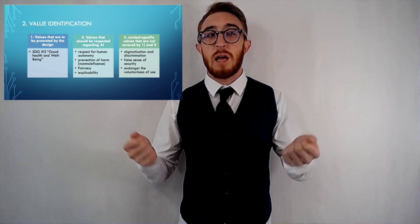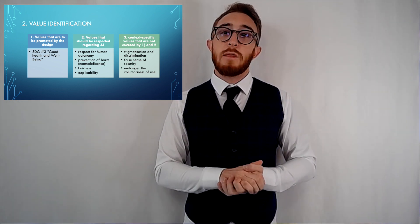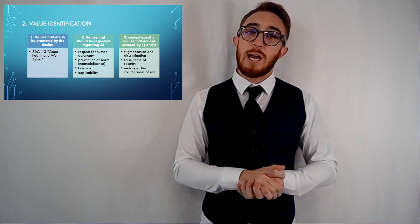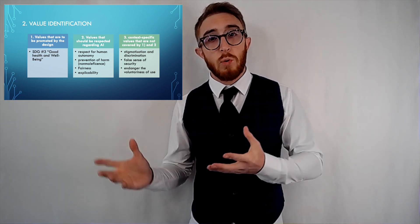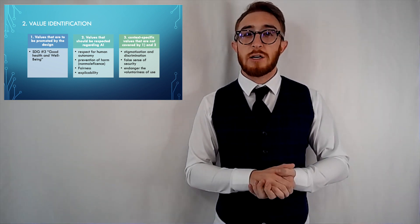And explicability. The employed AI system, in order to support the other values, must be explicable. This means that its inner workings must be intelligible, not opaque. And there must be at least one agent that is accountable for the way it works. They understand the way it works and are thus responsible for its actions.